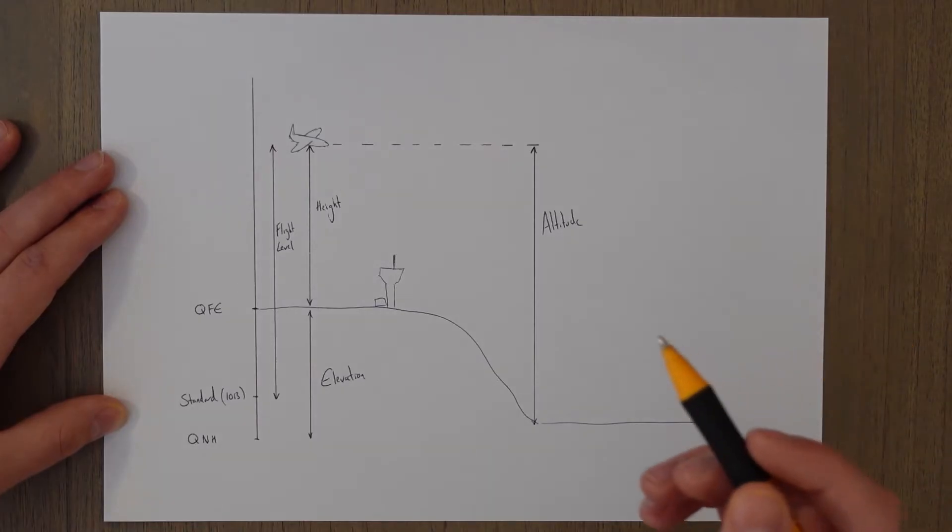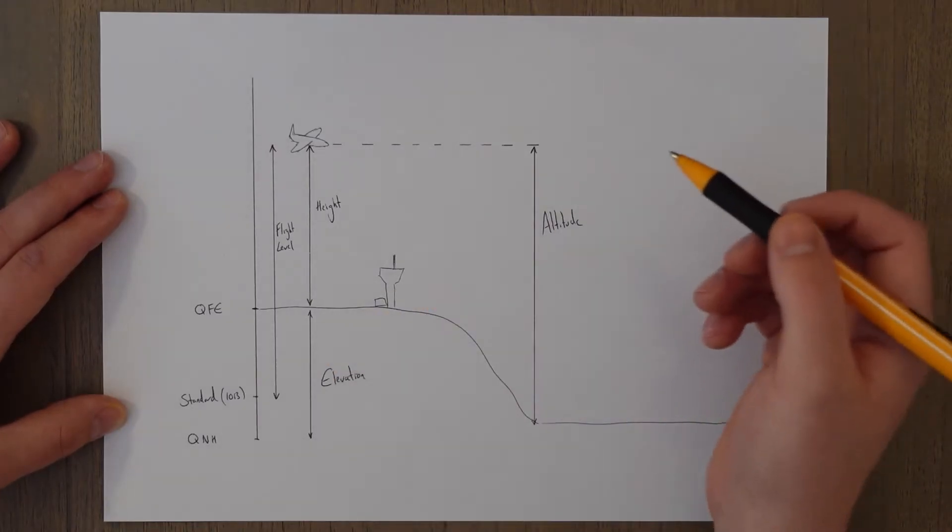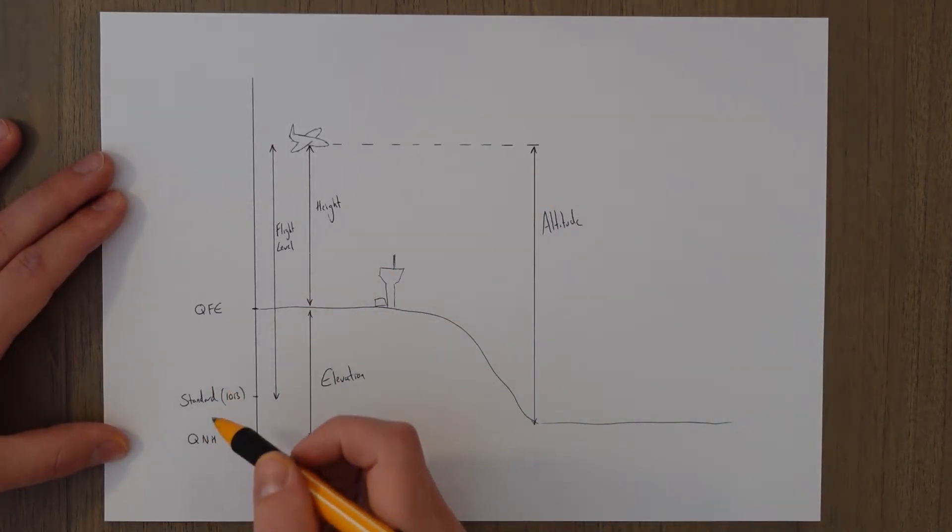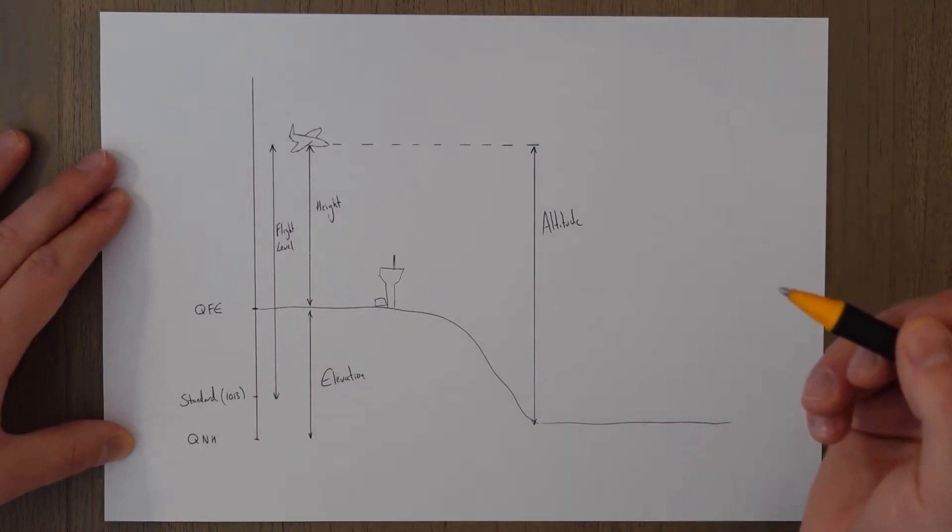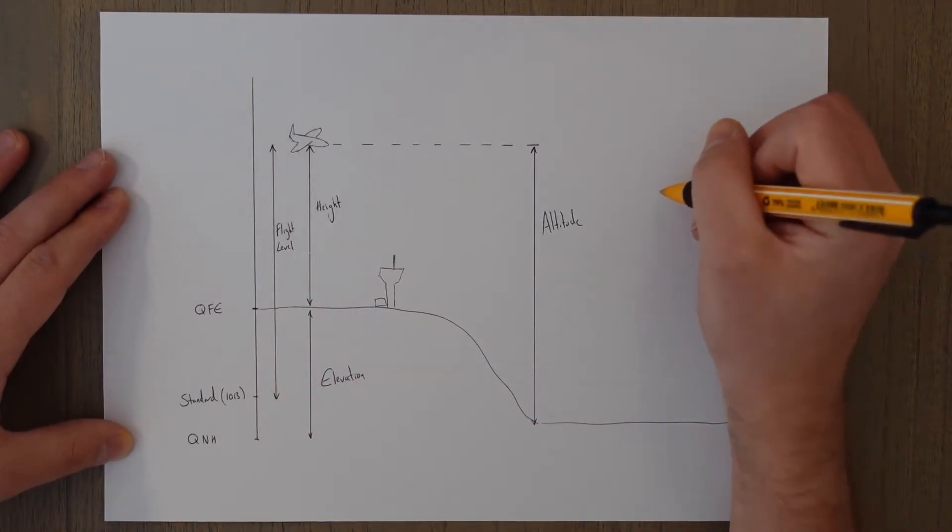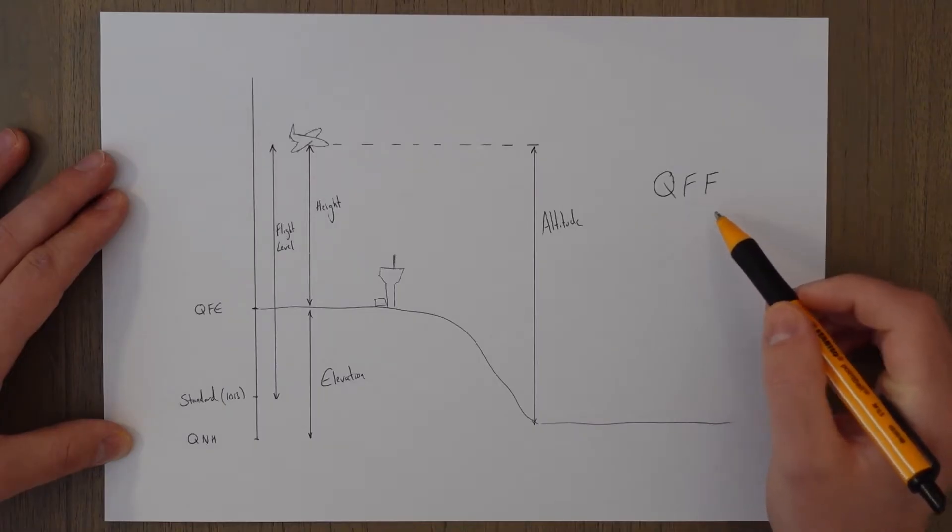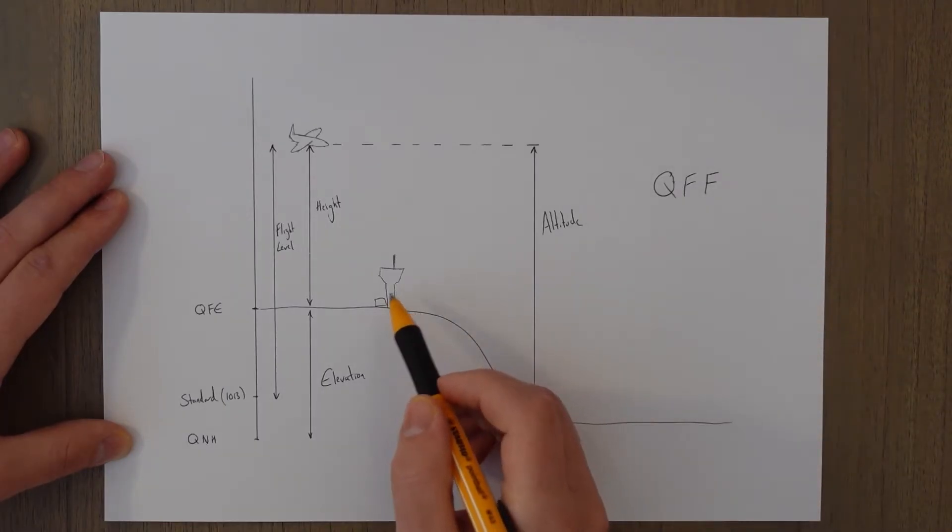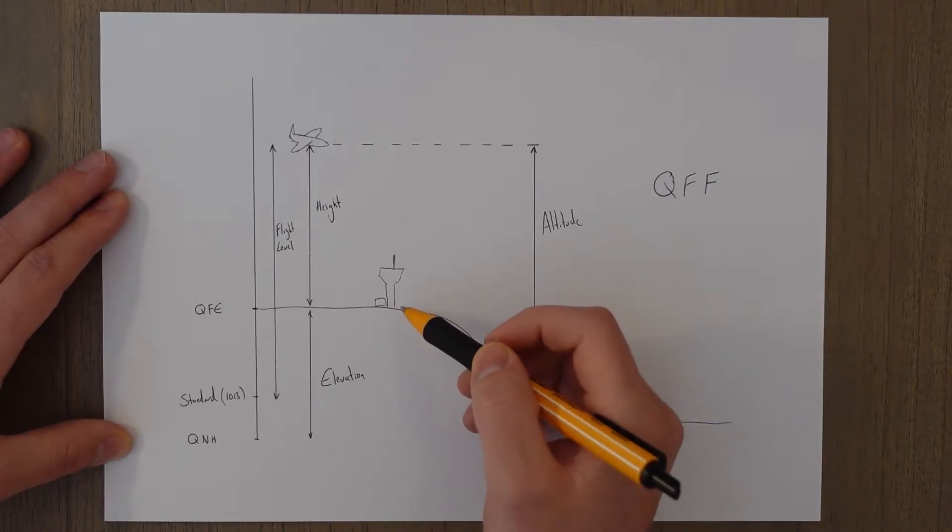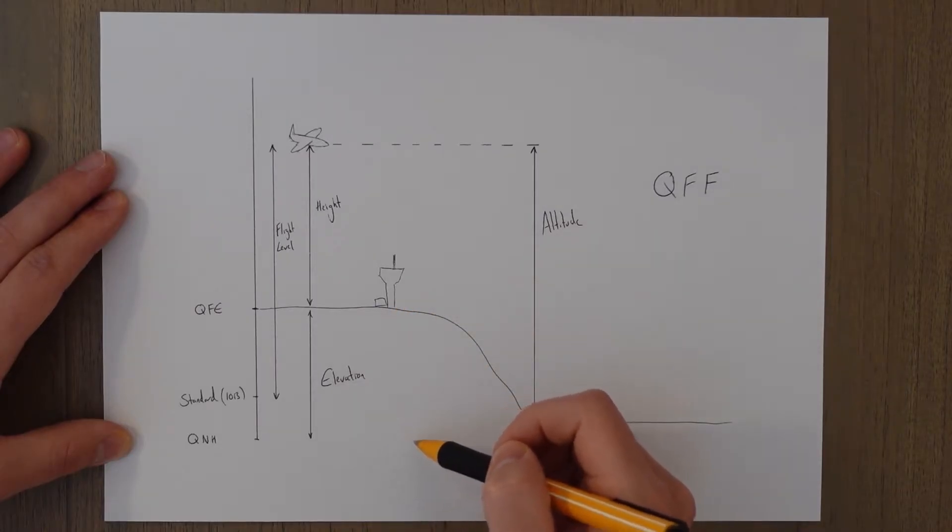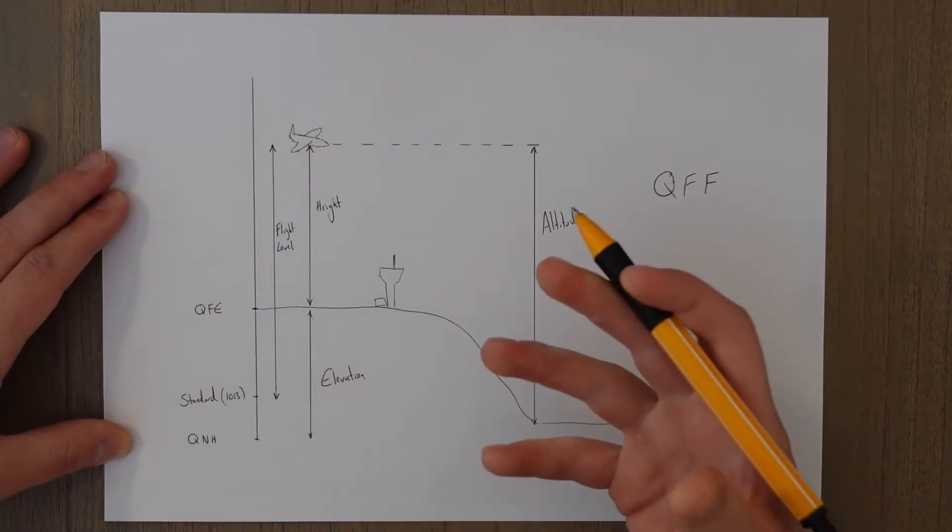Okay, so we have the datum pressure settings of QNH, QFE, and standard. And meteorologists we use one more which is called the QFF. This is the pressure setting measured at the airfield or weather station